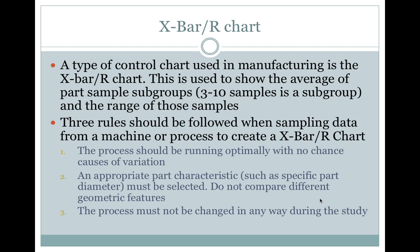X-Bar/R Chart. A type of control chart used in manufacturing is the X bar slash R chart. This is used to show the average of part sample subgroups, 3 to 10 samples in the subgroup, and the range of those samples. Three rules should be followed when sampling data from a machine or process to create an X bar R chart.